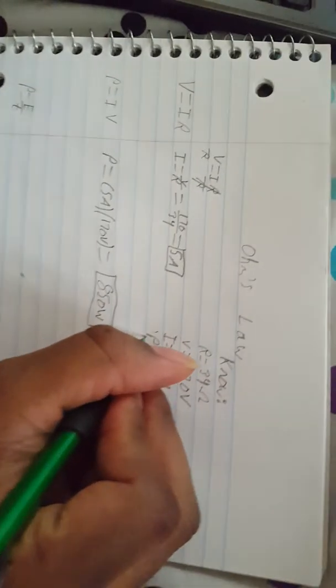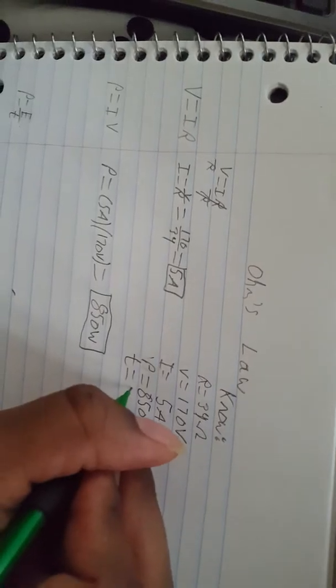Part 3 says: how much electric energy will be needed to operate this object for 21 hours? So now we have a new variable which is T, which is 21 hours, and we are going to use the third equation which is P equals E over T.